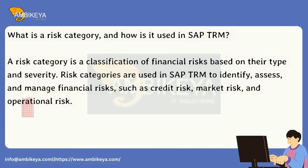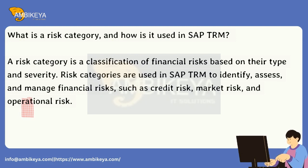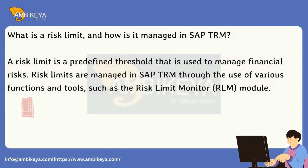What is a risk category, and how is it used in SAP TRM? A risk category is a classification of financial risks based on their type and severity. Risk categories are used in SAP TRM to identify, assess, and manage financial risks, such as credit risk, market risk, and operational risk.